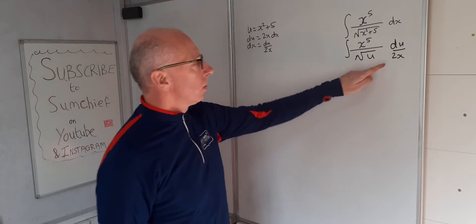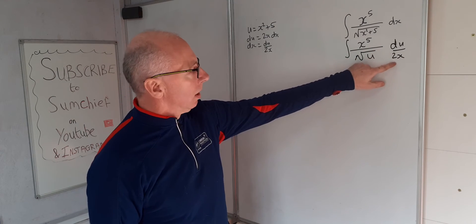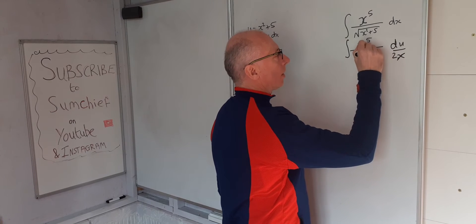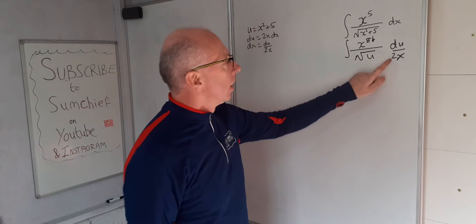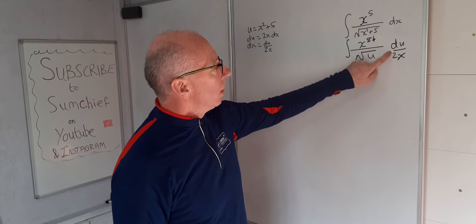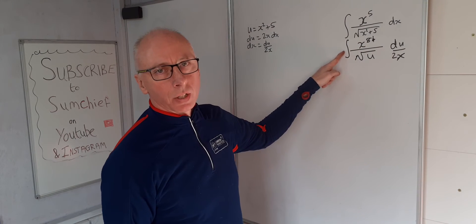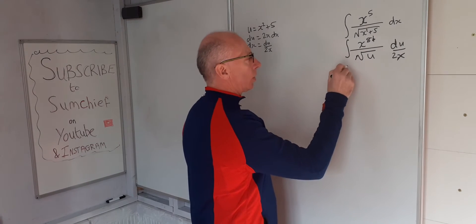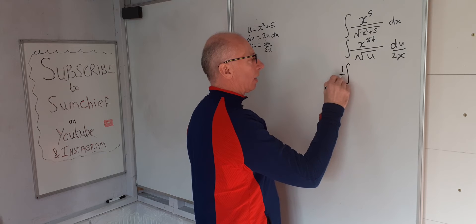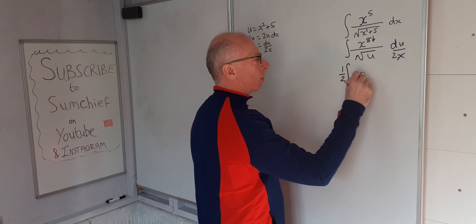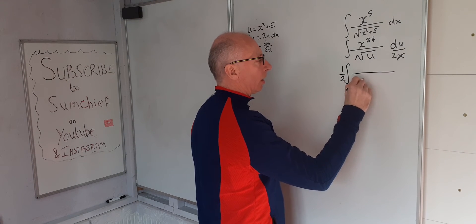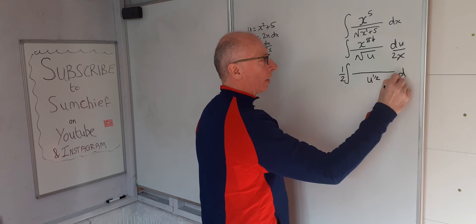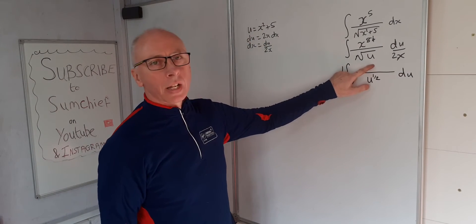We're coming into the u world now, just with a few things to sort out. The x to the 5 and the x in the denominator cancel, leaving x to the 4. The 2 becomes a half, which we can bring out to the front using the laws of integration. So we have one half times the integral of x to the 4 times u to the half du — we just need to find a term for x to the 4.